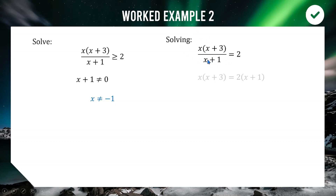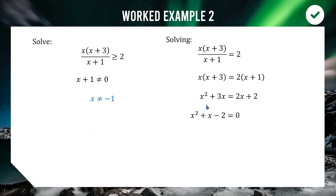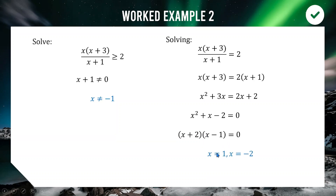Multiplying (x + 1) across, expanding, and rearranging gives the quadratic x² + x − 2 = 0. Factorizing (adding to 1 and multiplying to −2) gives factors (x + 2)(x − 1), so our solutions are x = −2 and x = 1 — our other two critical values.